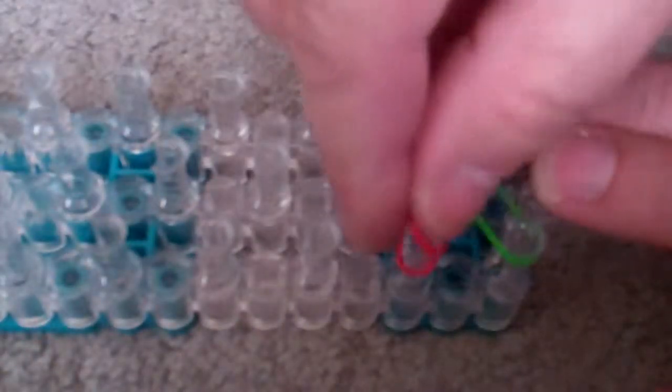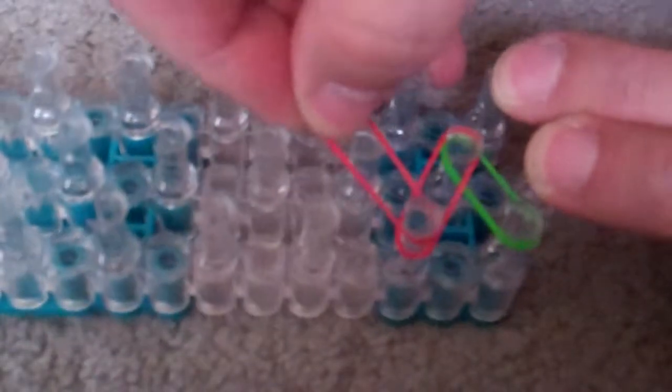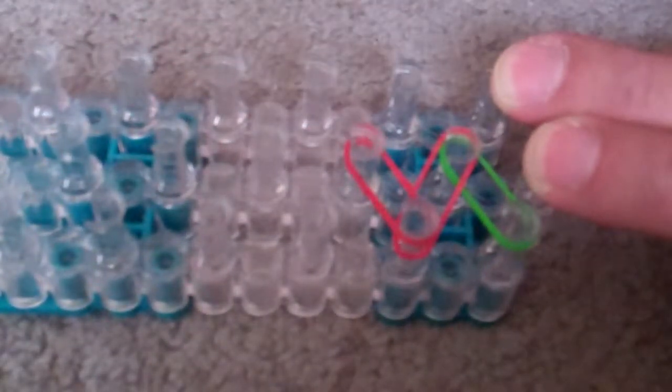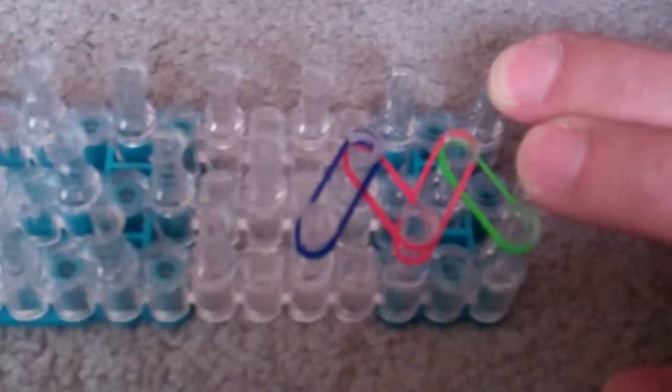Then you start on the peg and just stick a rubber band over the top of that one, and you just keep going back and forth. Then go to the next peg up and just alternate until it's completely filled up in a pattern like this.